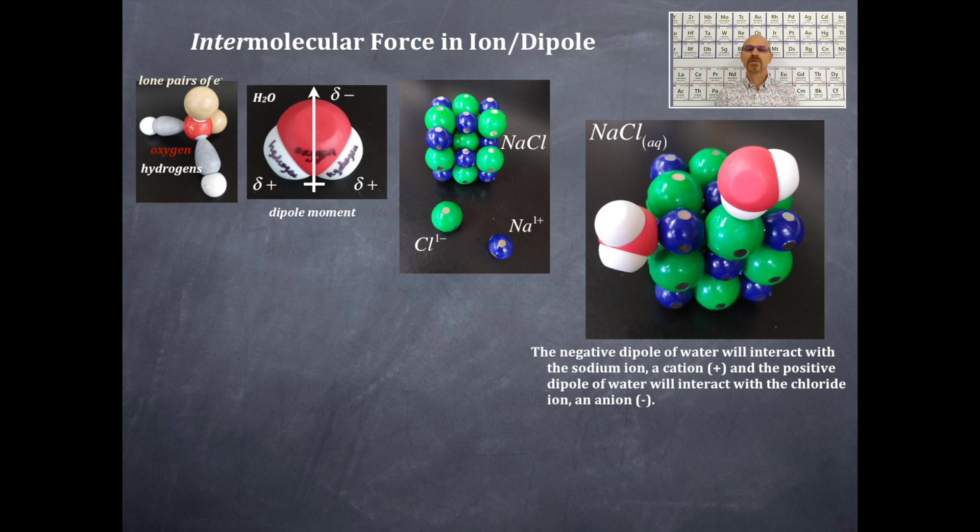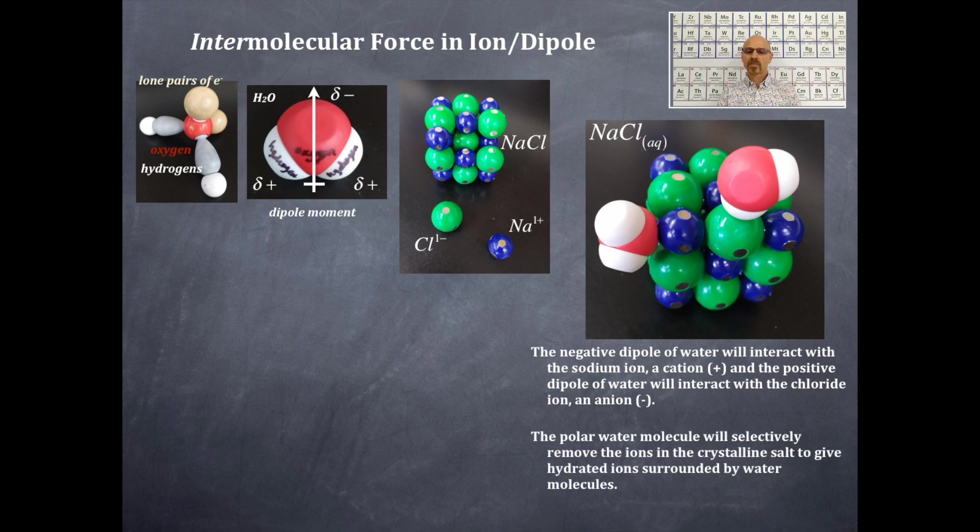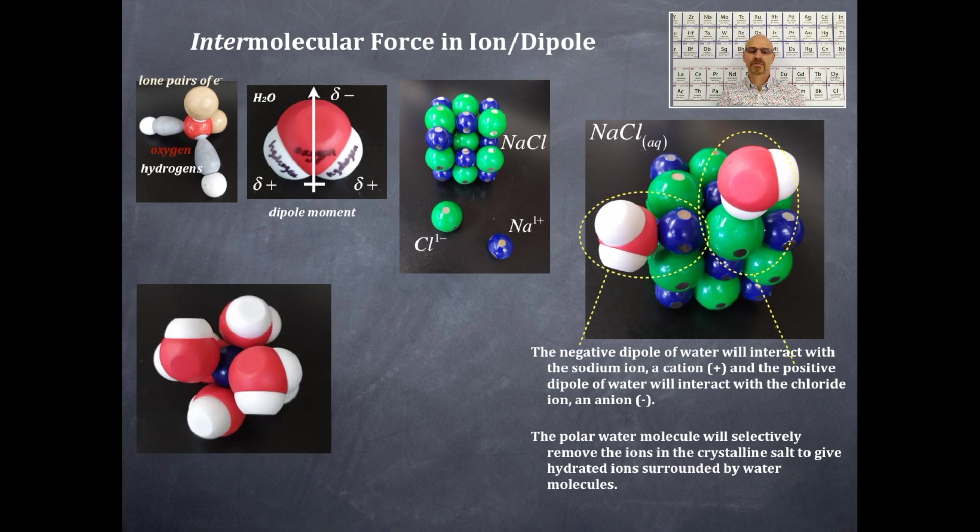Whereas the blue sodium ion is a cation, it's positively charged, and the red oxygen, that is delta negatively charged, is attached to that. The polar water molecule will selectively remove the ions of the crystalline salt to give hydrated ions that are surrounded by water molecules. So we're going to show you what that looks like. And those are just one water molecule interacting with the sodium and chloride ion, respectively.